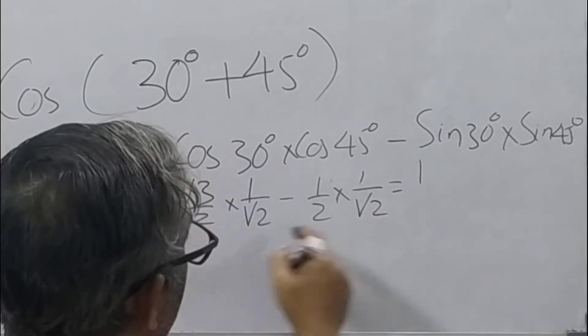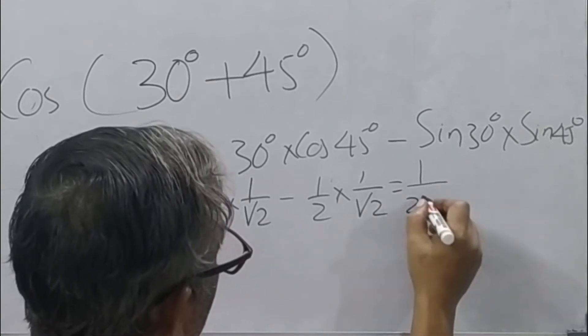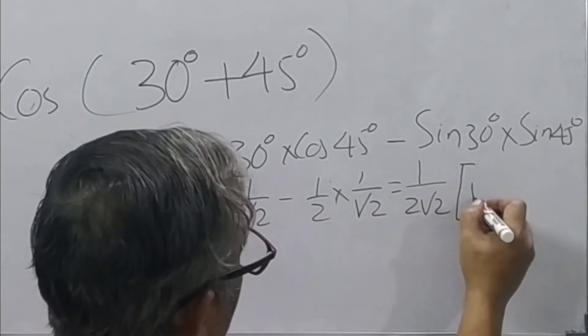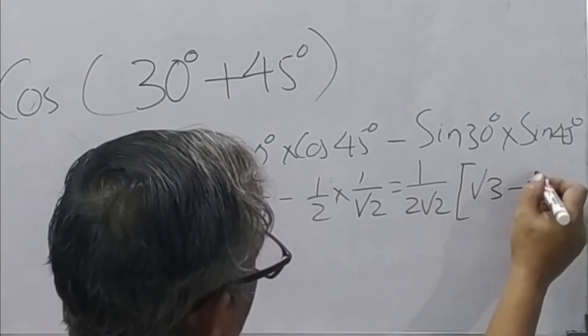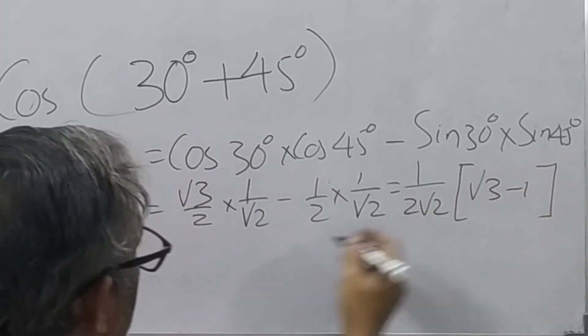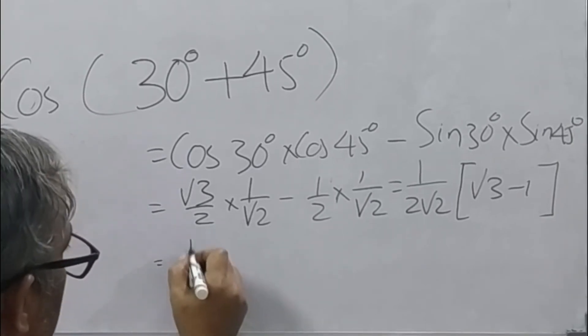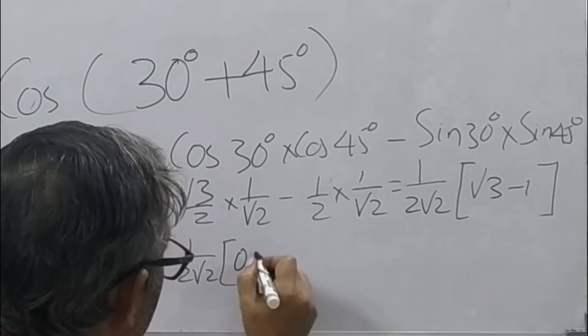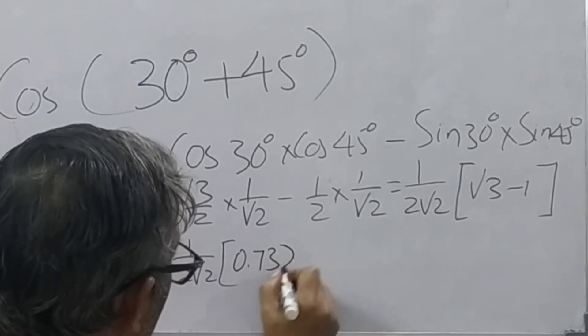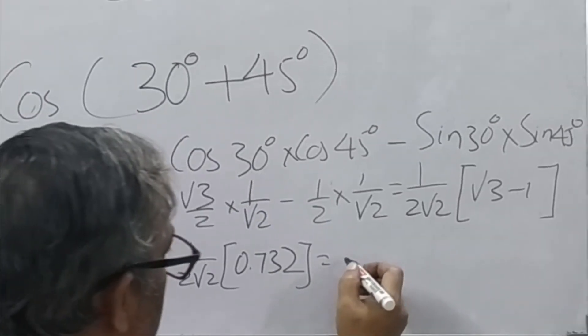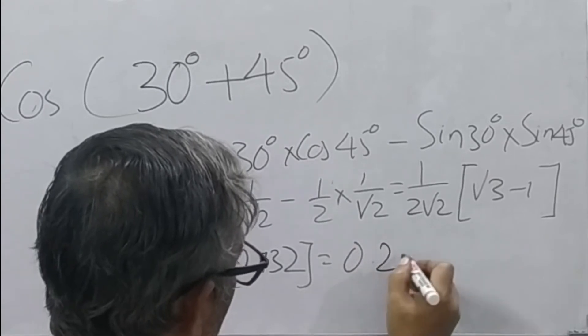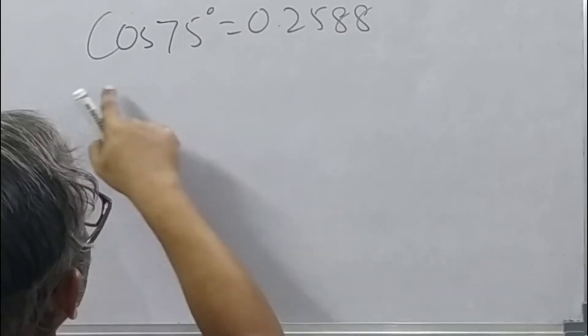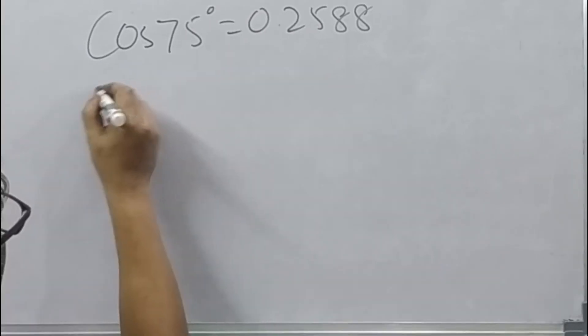So it comes out to be we can take 1 by 2 root 2 common and in the bracket root 3 minus 1. That becomes 1 by 2 root 2, 0.732 minus 1, so it comes out to be 0.2588.